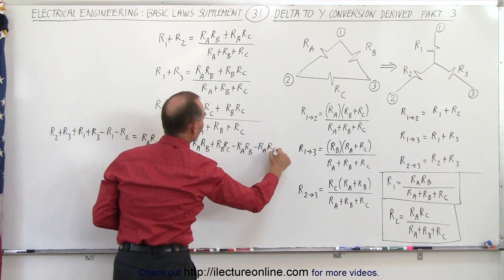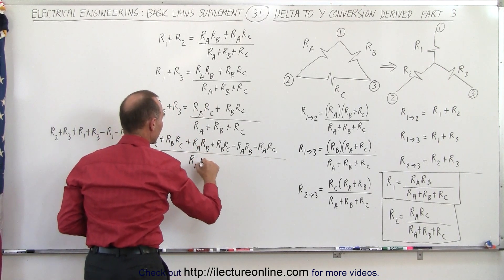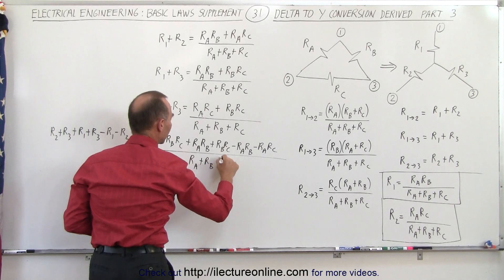And the whole thing on the right side is divided by the common denominator of RA plus RB plus RC.